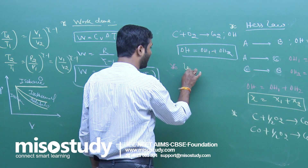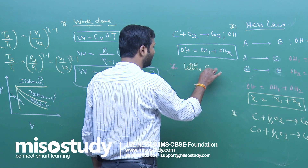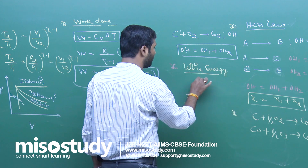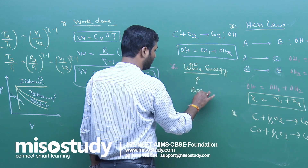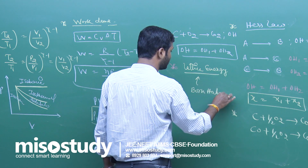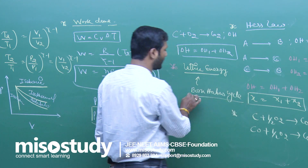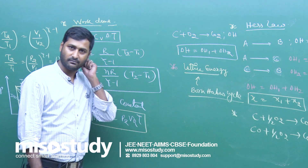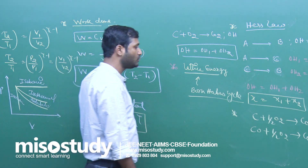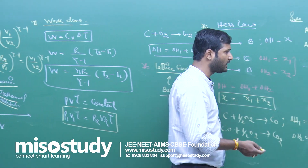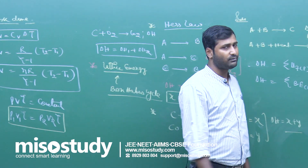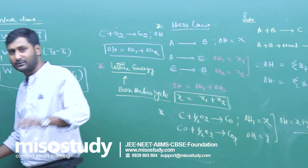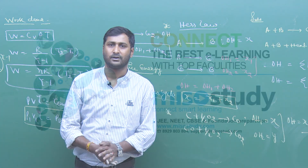By using Hess's Law and the Born-Haber cycle, we can easily find the lattice energy of a system. These are the key formulas that will help you in problem solving. Thank you so much, bye bye!